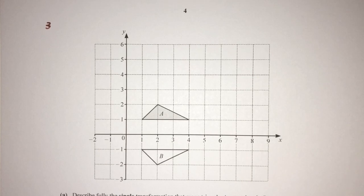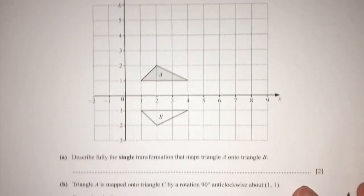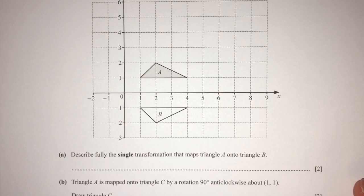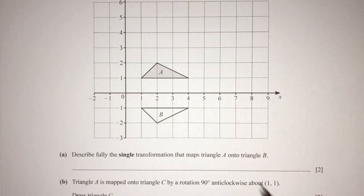So now let's move on to question number three in this series regarding the chapter transformation. Again here we have a graph or diagram which shows triangle A and triangle B. Now part one, describe fully the single transformation that maps A onto B.